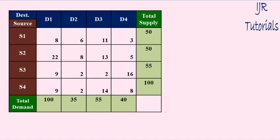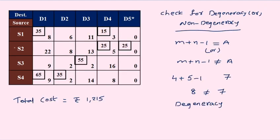Let us see one example. The given matrix consists of four rows and four columns: S1, S2, S3, S4 and D1, D2, D3, D4. Solve this problem using RAM. I applied RAM and got this matrix. We can now check whether it is DGNC or non-DGNC — that is, m plus n minus 1 equals A or not. The number of rows is 4, number of columns is 5, so 4 plus 5 minus 1 equals 8. The number of allocations are 7. Since 8 is not equal to 7, it is referred to as DGNC. The total cost of this problem is 1,215.